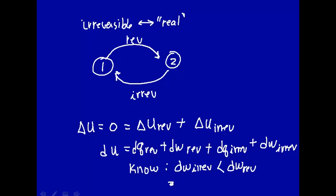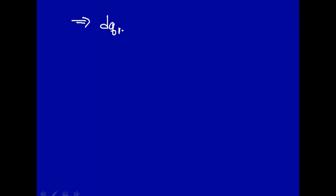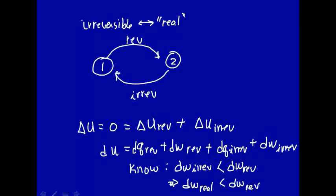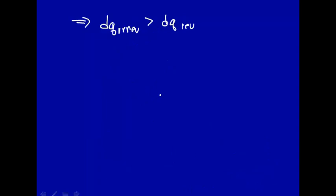Any work you can get out from a real process is always less than the work you can get out from that ideal reversible process. Now, if that's the case, this implies that the heat transferred in an irreversible process will always be greater than the heat transferred in a reversible process. Since dw irreversible is less, in order to balance out, dq irreversible — the real process — will have to be greater than the ideal.